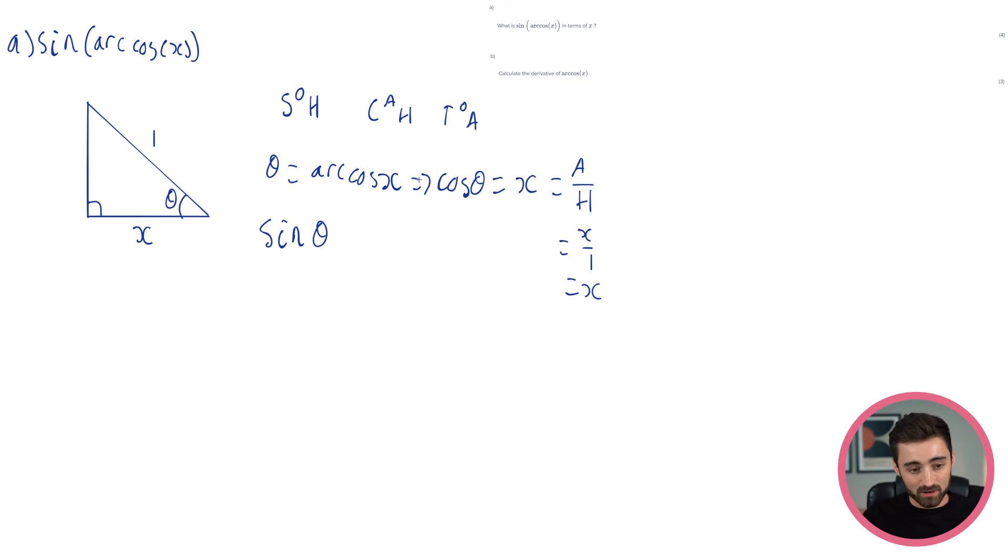But what's nice now is I can say, well, okay, well, if I have this triangle and this theta, I can actually work out sine theta from the triangle because sine theta from Sokotoa is O over h. I know h, but I don't know O yet, do I? So I just need to work out what O is. As soon as I have O, well, that's going to be the value of sine theta, which is going to be the value of this?